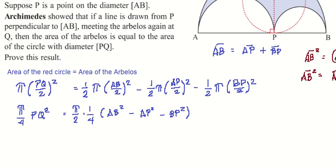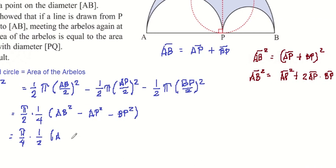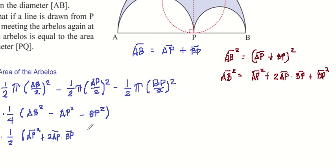Let me change the color again. So that would give — can I simplify this to π/4? Because there's π/4 here already. So ½, the same thing, right? And AB² is equal to AP... what was that again?